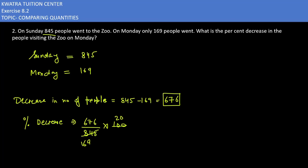So the answer will be 4. So 4 times 20, how much is it? 80. That is 80%. That means 80% decrease in people visiting the zoo on Monday. Now we will be moving to the next one.